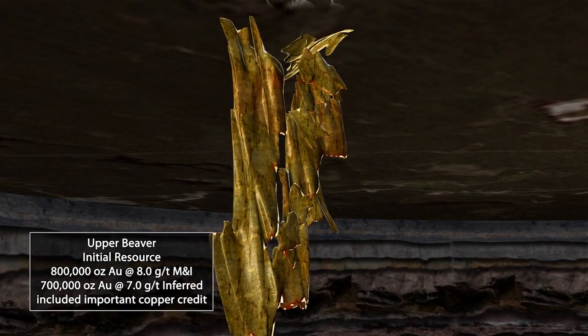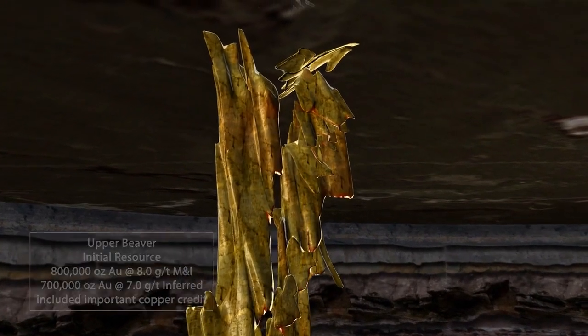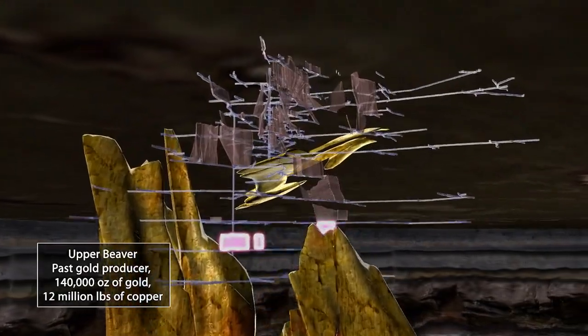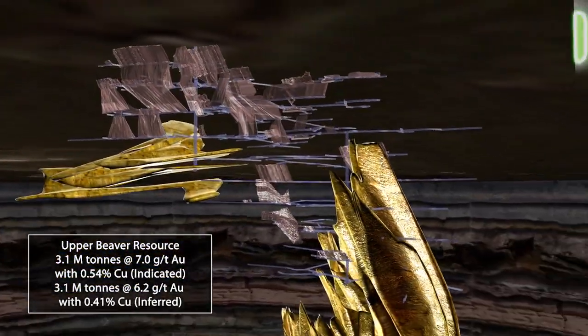With a $25 million exploration budget in 2012 and continued success over the next three years, Queenston is on its way to its initial target of 6 million ounces of gold.